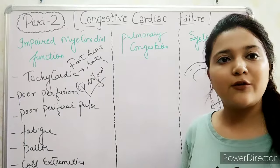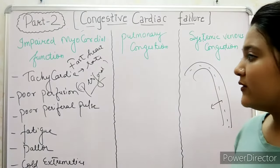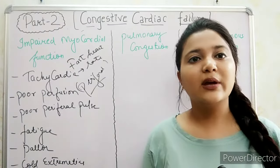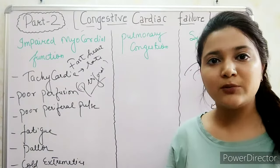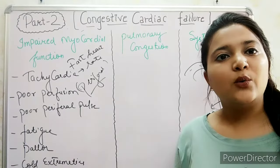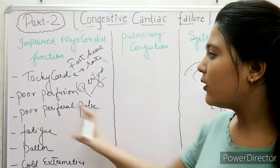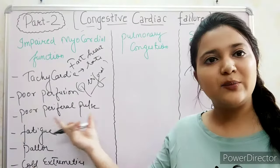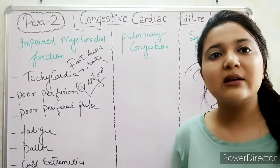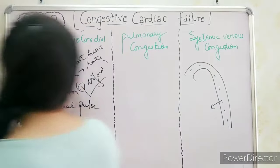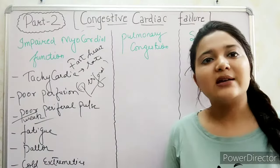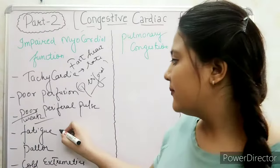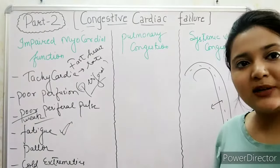Poor peripheral perfusion occurs because of inadequate cardiac output. The word 'peripheral' means away from the heart and lower extremities. Poor peripheral pulse means the peripheral pulse is weak — for example, if we take a femoral pulse, it will be weak. Fatigue means easy fatigability or malaise, and the patient will feel weakness.